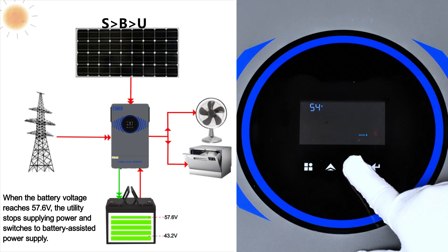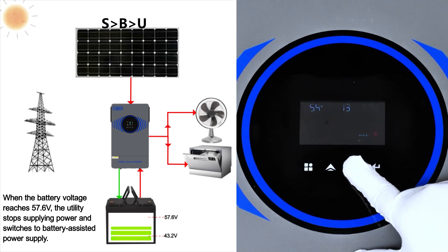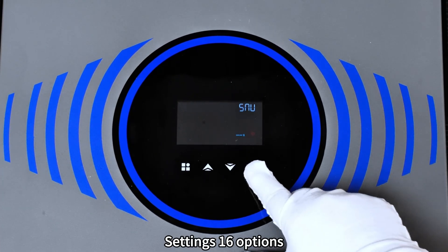When the battery voltage reaches 57.60V, the utility starts supplying power and switches to battery-assisted power supply. Settings 16 options.